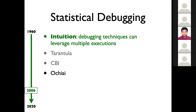Then a large number of papers tried to improve the formula. One worth noticing that became very popular is Ochiai, by Rui Abreu and colleagues, which uses a formula adapted from molecular biology for fault localization and was shown to tend to be more effective than Tarantula's formula.